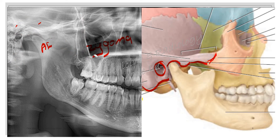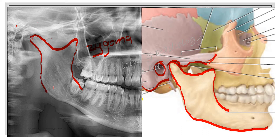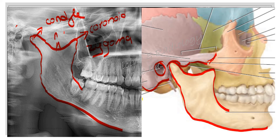Now, with the mandible, let us see what structures are present. Here you can see this is the condyle, this is the mandibular notch, coronoid process, external oblique ridge, the ramus of the mandible, angle of the mandible, and the lower part of the mandible. Similarly, you can trace them in the radiograph: condyle, mandibular notch, coronoid process, external oblique ridge, ramus of the mandible, angle of the mandible, and the lower border of the mandible.